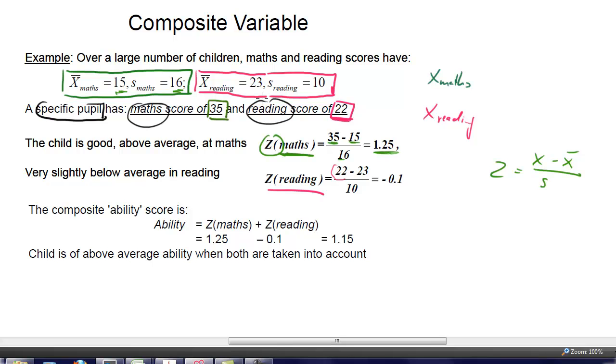What about the reading scores? The reading score is 22. So we calculate another standardized score. 22 subtract the average 23, divide by the standard deviation 10. We get negative 0.1. That particular student is just slightly worse than the average, only a tenth of a standard deviation.